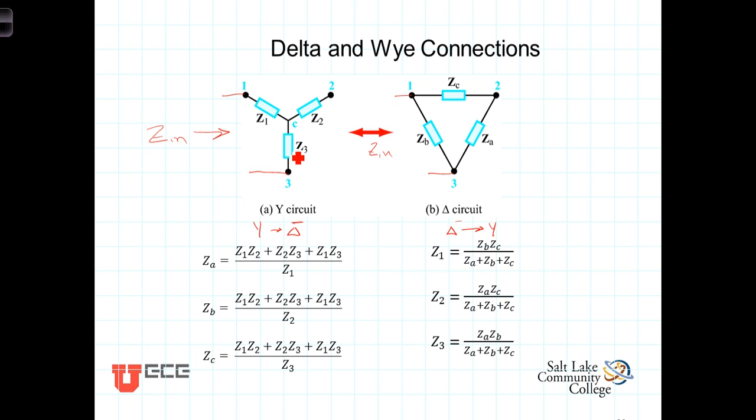Under those circumstances, when Z1 equals Z2 equals Z3, we'll call that Z sub Y. When that is the case, then Z sub A equals Z sub B equals Z sub C, we'll call that Z delta.